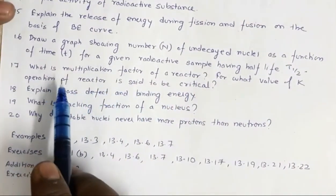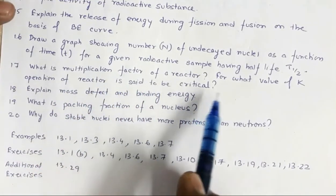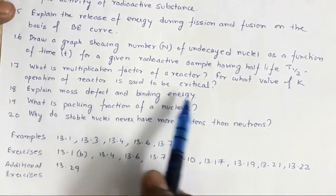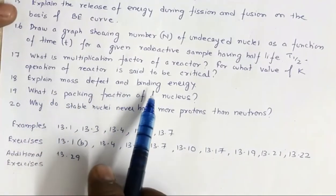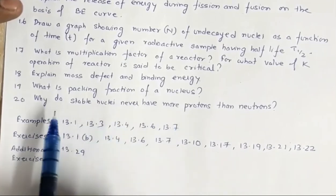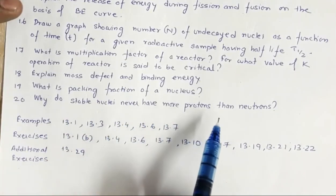Now this is with reference to the nuclear reactor. What is multiplication factor? For what value of k, so k is a multiplication factor, the operation of nuclear reactor is said to be critical. Explain mass defect and binding energy. What is a packing fraction of nucleus? Why do stable nuclei never have more protons than neutrons?